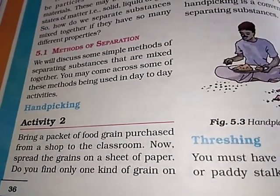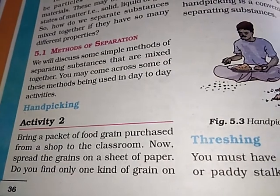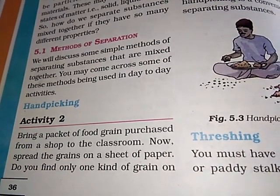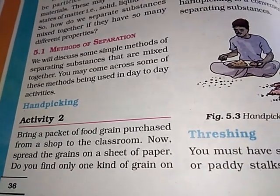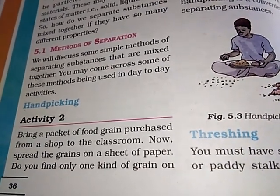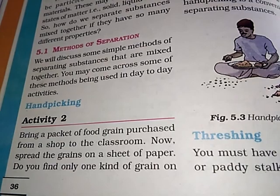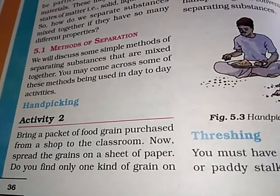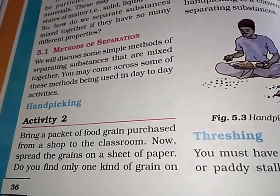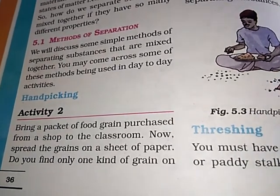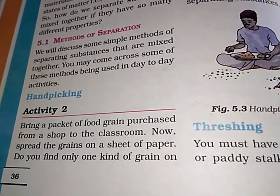Hand Picking: Bring a packet of food grains purchased from a shop to the classroom. Spread the grains on a sheet of paper. Do you find only one kind of grain on the sheet of paper?